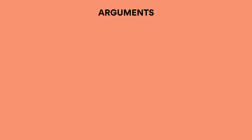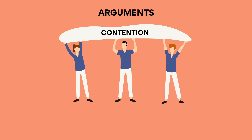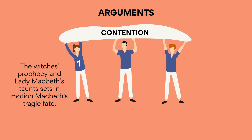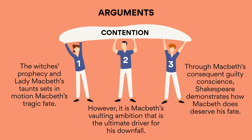Then you move into arguments. Your arguments support your overall contention and are the points you use to prove it. Each essay usually has around three to five main arguments, which become your body paragraphs. For example: argument one — the witches' prophecy and Lady Macbeth's taunts set in motion Macbeth's tragic fate. Argument two — it is Macbeth's vaulting ambition that is the ultimate driver for his downfall. Argument three — through Macbeth's consequent guilty conscience, Shakespeare demonstrates how Macbeth does deserve his fate. Each one of these arguments then becomes a body paragraph.